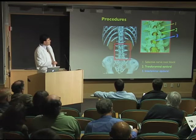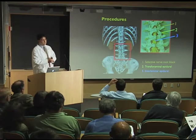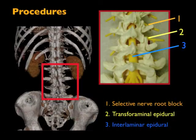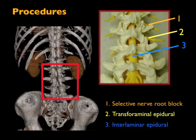I can put the needle in three different places when I do these epidural injections. One, I can put the needle right up against the nerve — that's called a nerve root block. Two, I can put the needle up to the nerve and next to the foramen such that when I inject, the medication will cover the nerve and it will sneak into that spinal canal at that level too.